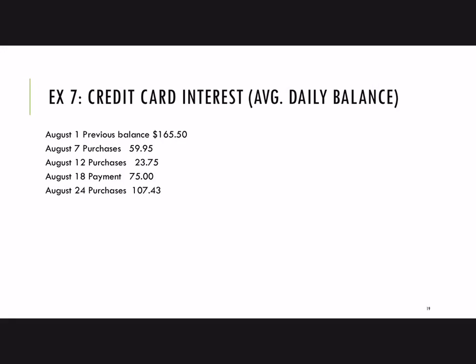Let's start with the average daily balance. On the 1st, the balance is $165.50. How many days is that balance on the card? That's on the card August 1st through 6th, and then on the 7th another purchase is made, so the balance changes. So this is the balance for six days — August 1st through 6th.